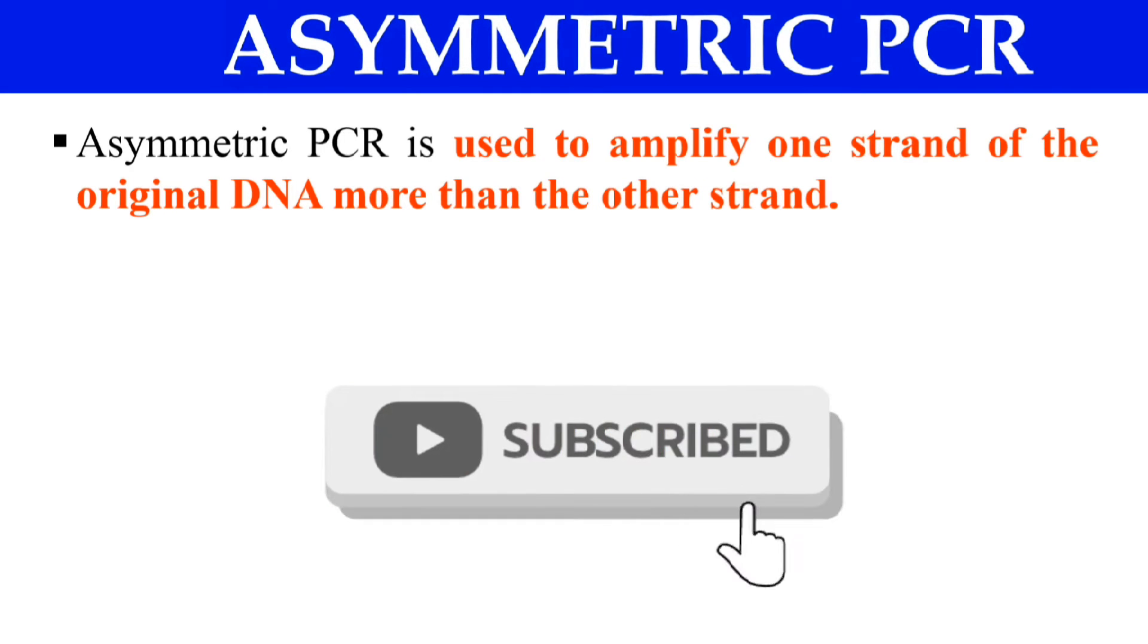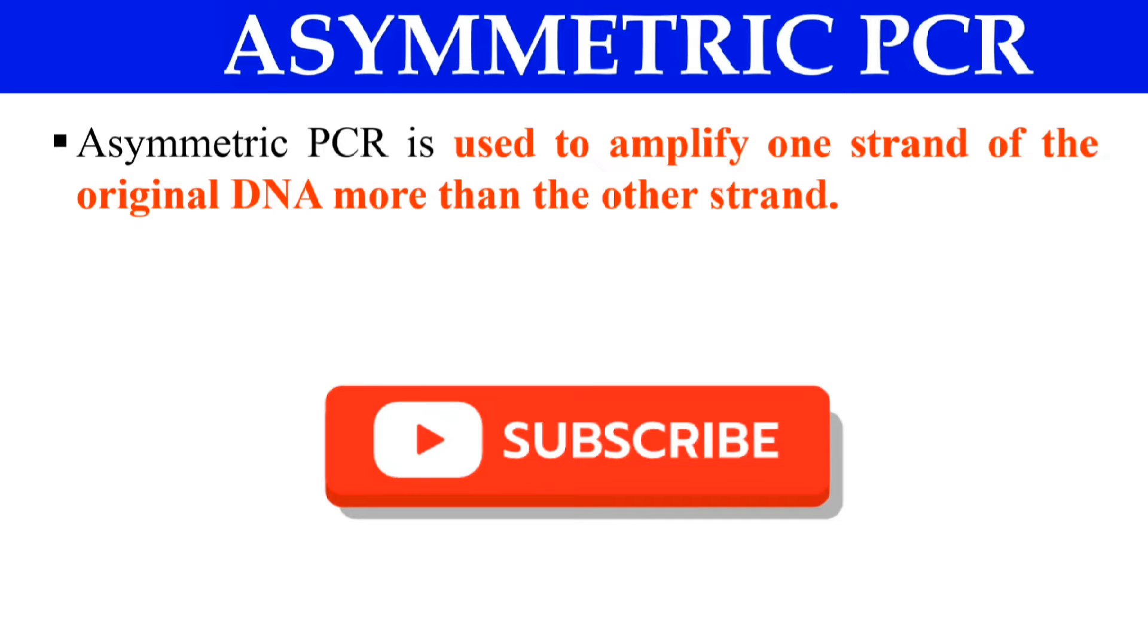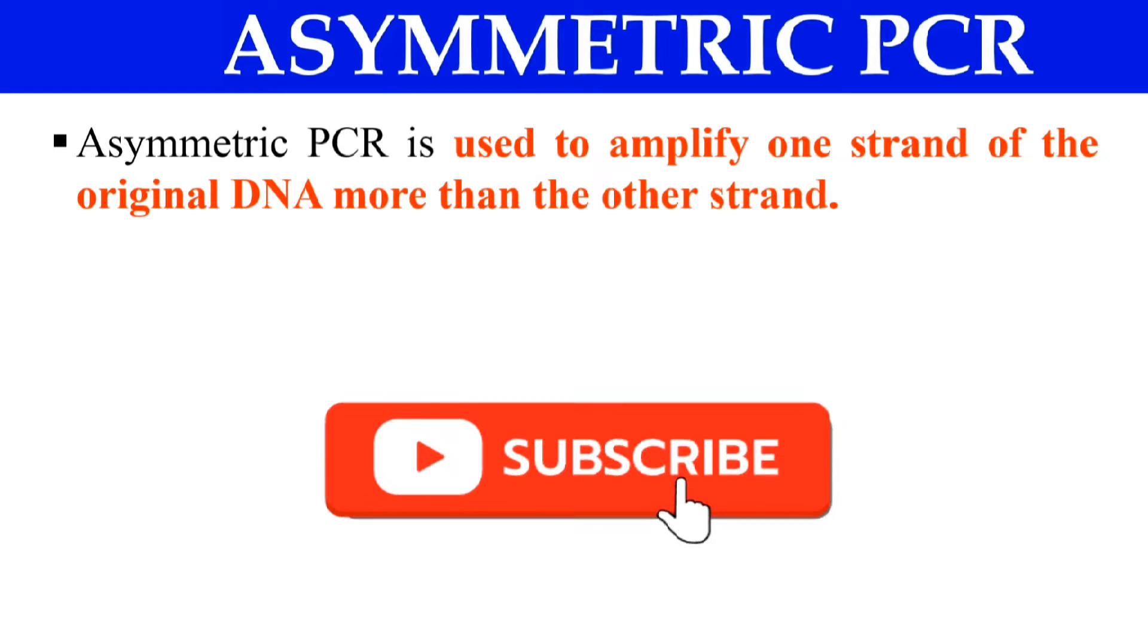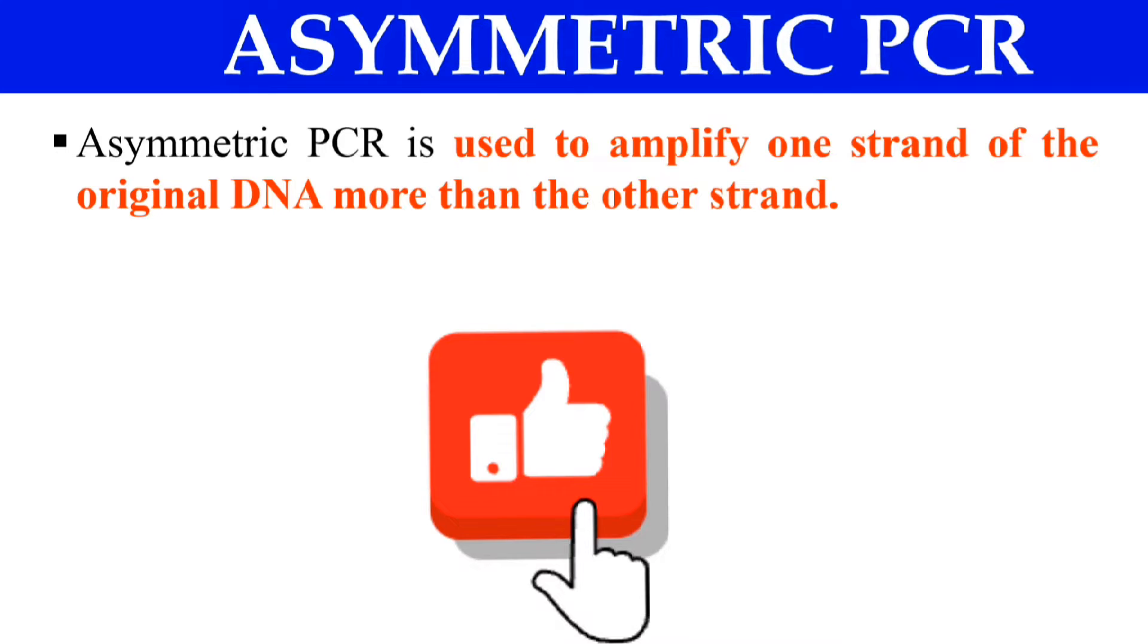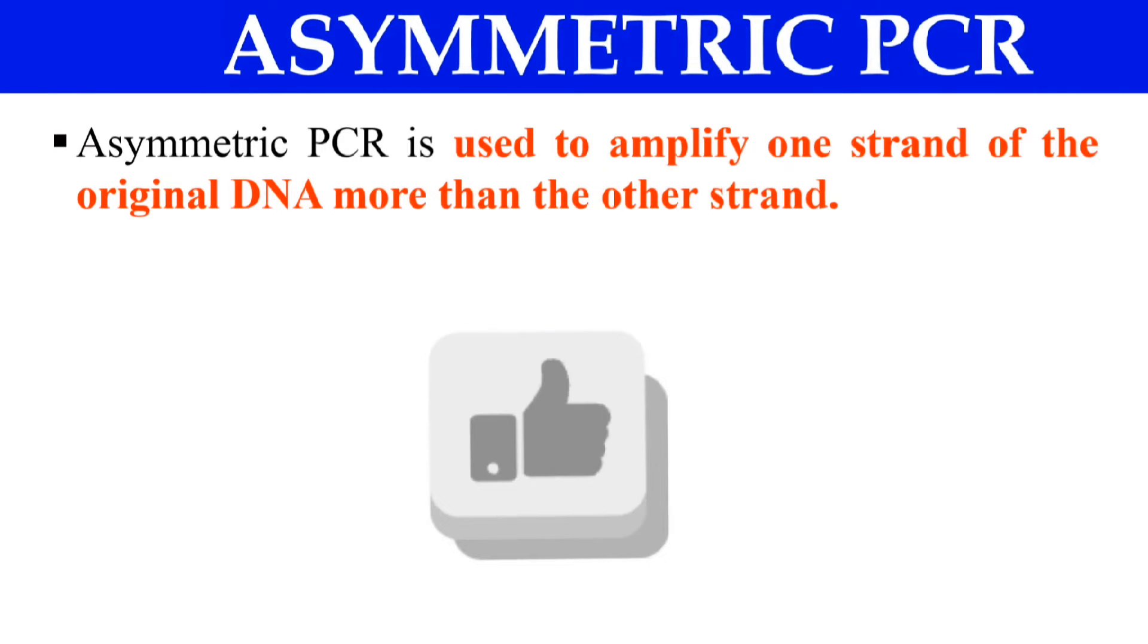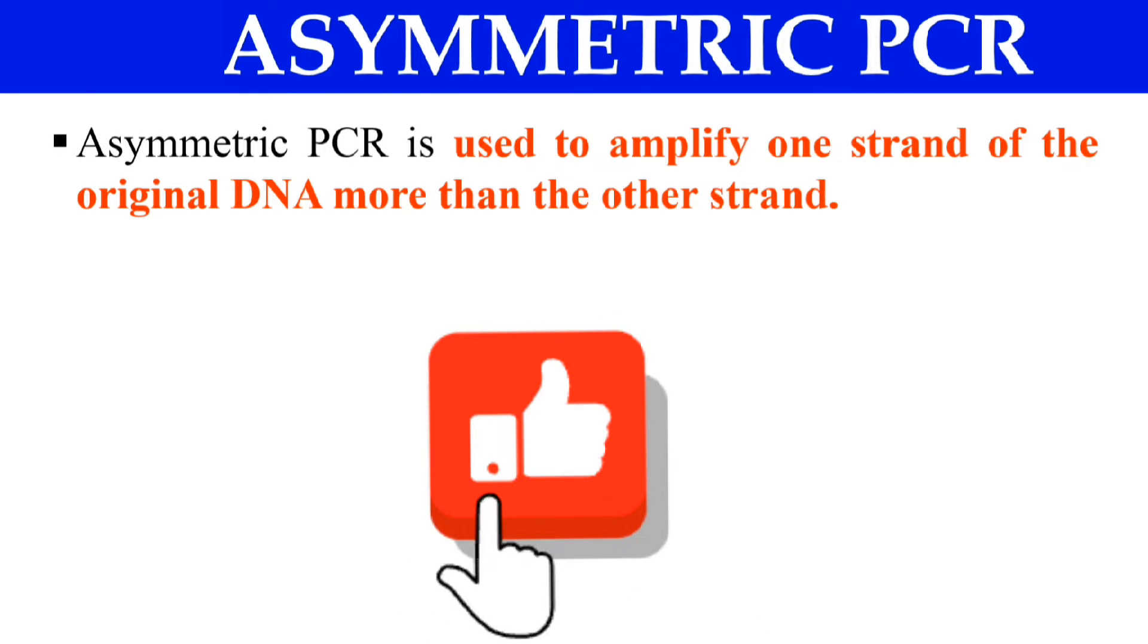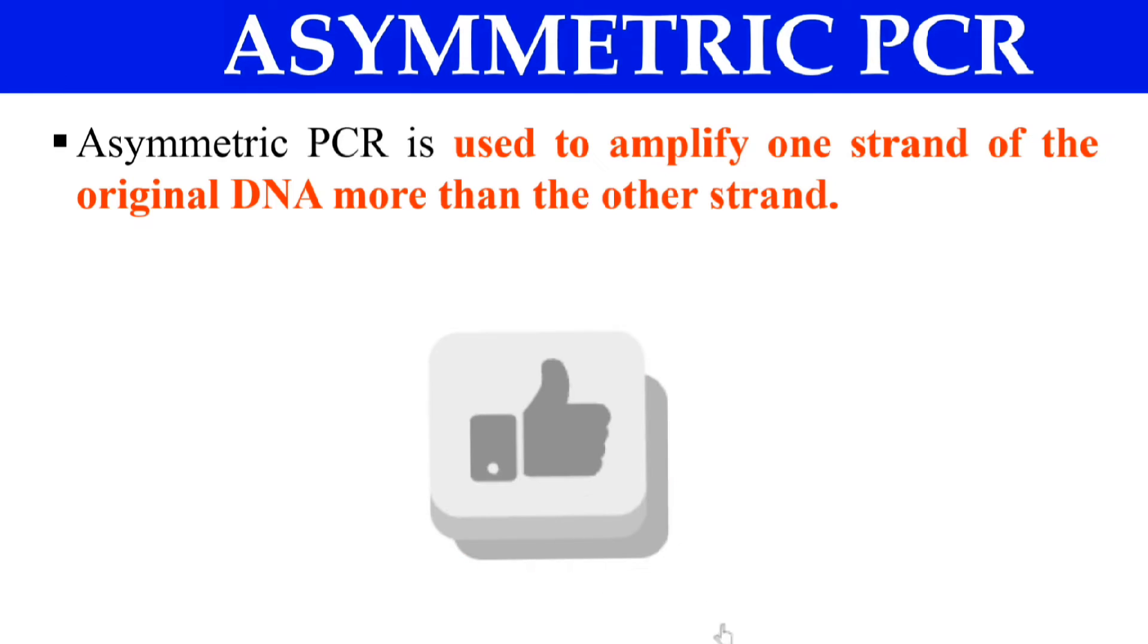So asymmetric PCR means when we amplify one strand of original DNA more than the other strand. DNA has two strands. Usually in PCR, we amplify both strands in equal quantity. But in asymmetric PCR, we want to amplify only one strand of DNA more than the other strand.